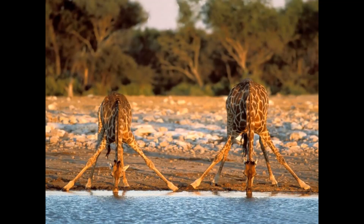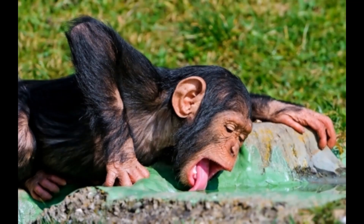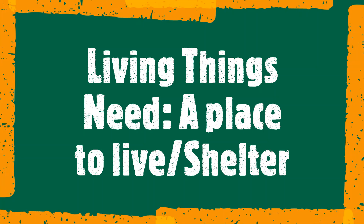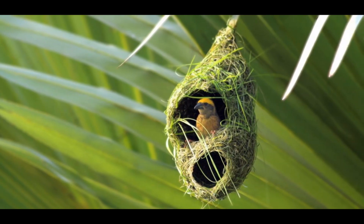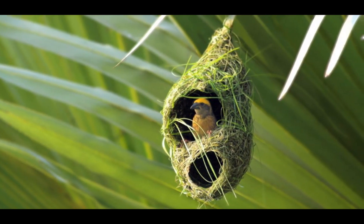Organisms differ greatly in terms of how much water they need and how they get it. You could survive only about three days without water. You get water from fluids that you drink and food that you eat. Some animals get water just by licking the dew off the ground in the morning.